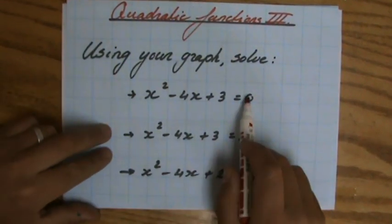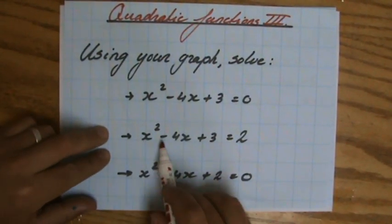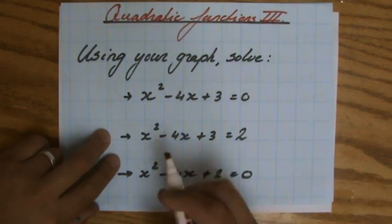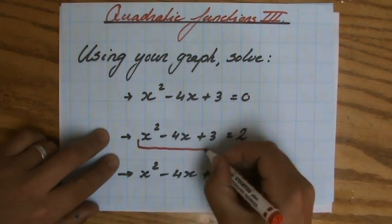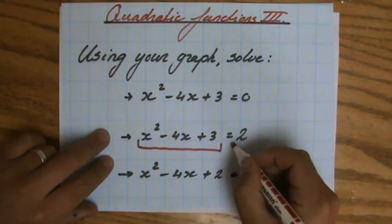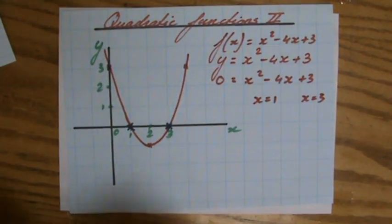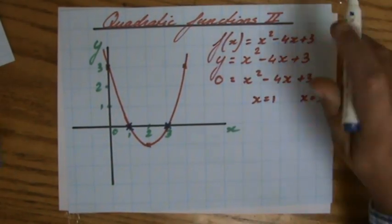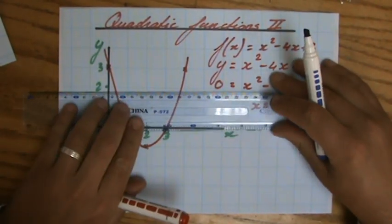Now they say, does it say 0? It says 2. x squared minus 4x plus 3 equals 2. This is the equation of my graph. It's the function of my graph. When does it equal 2? When is y 2? y equals 2.